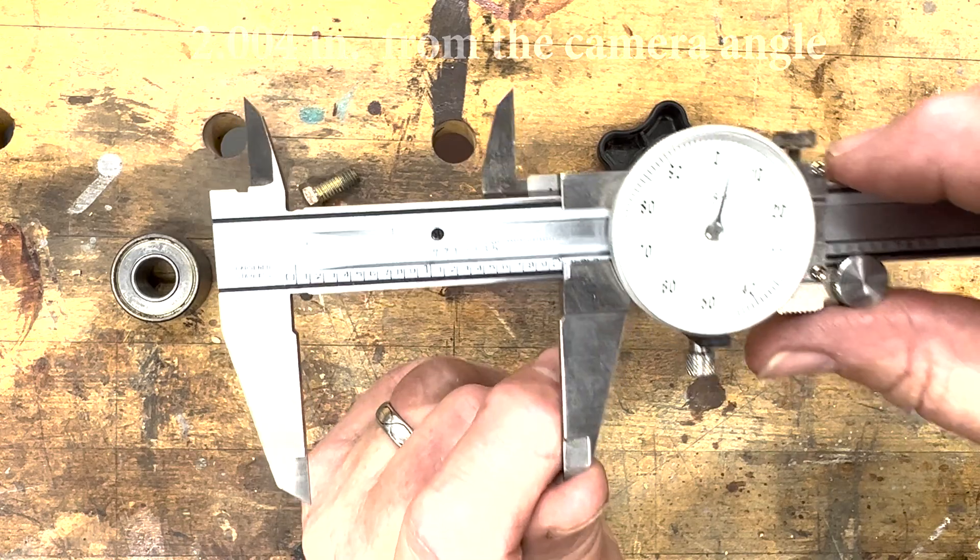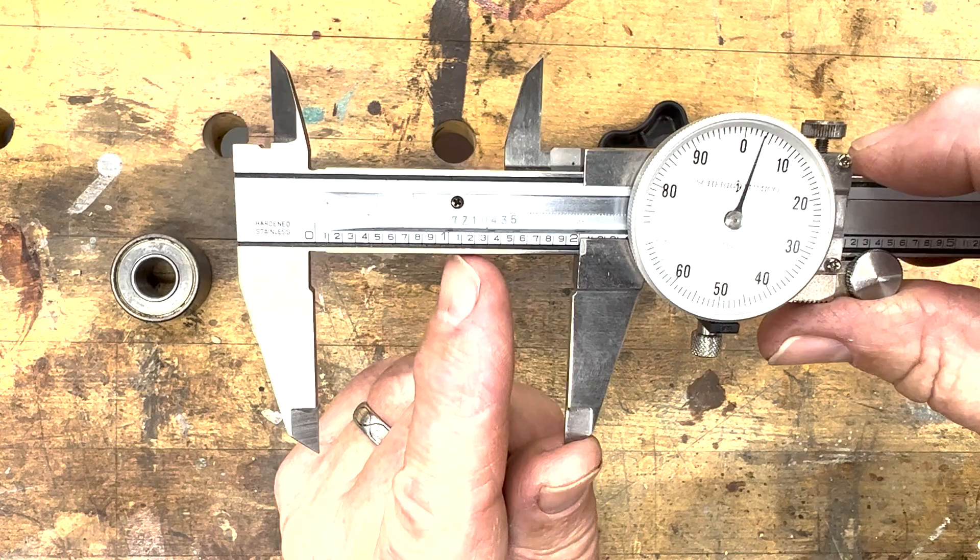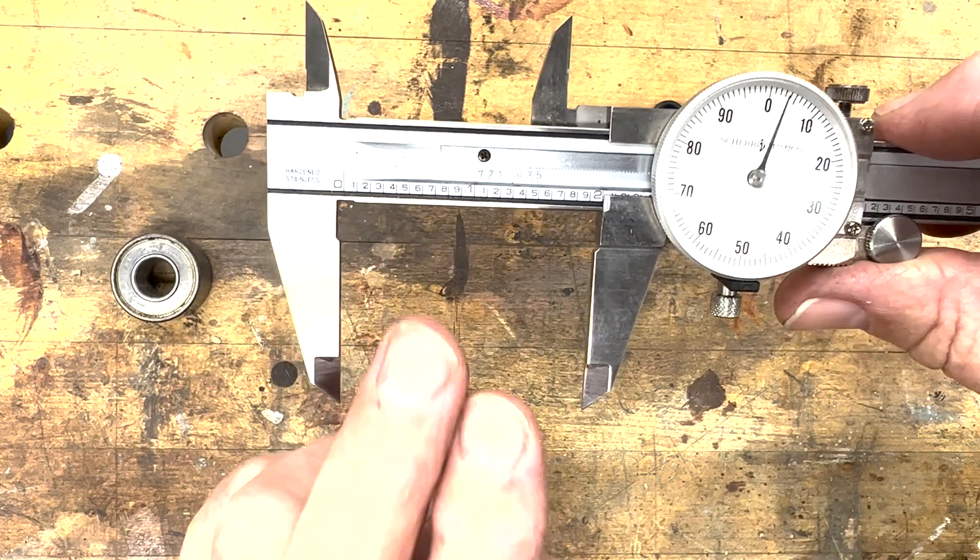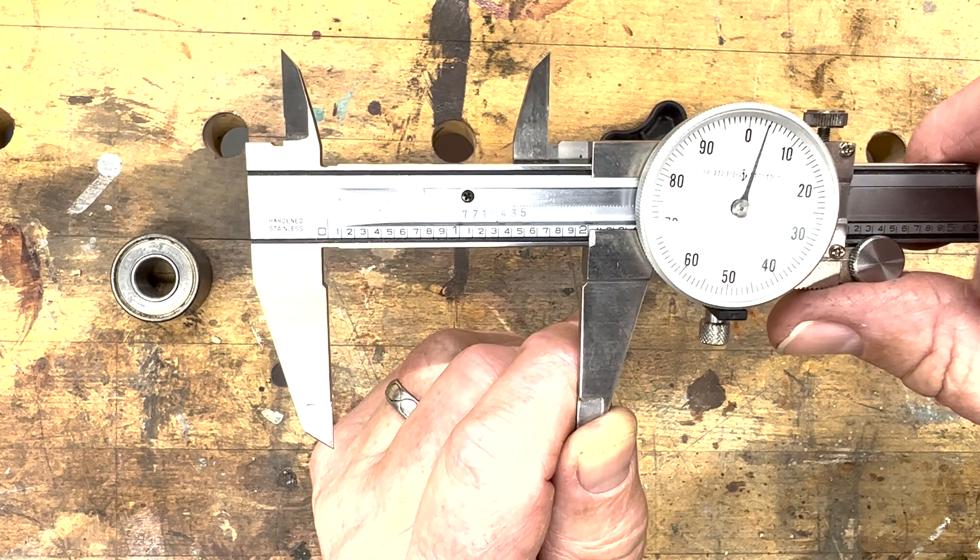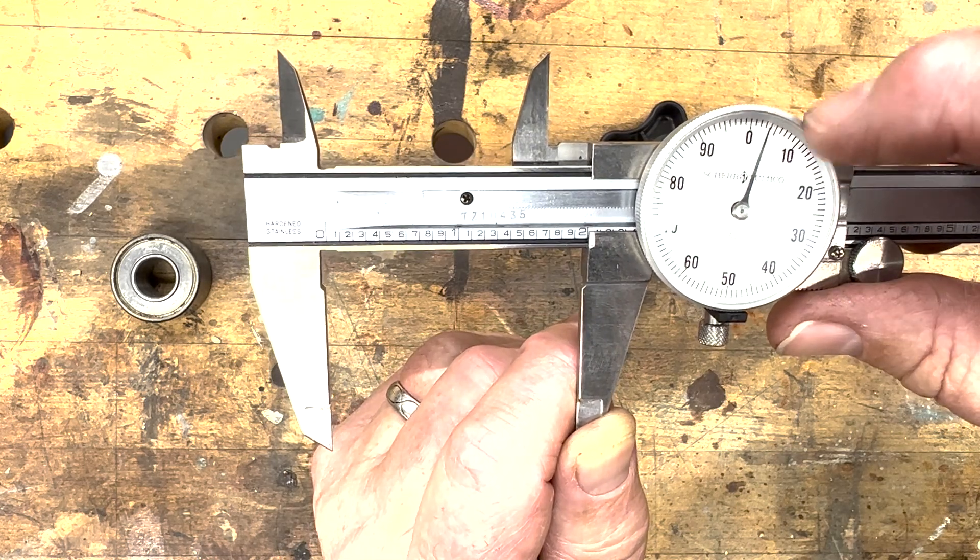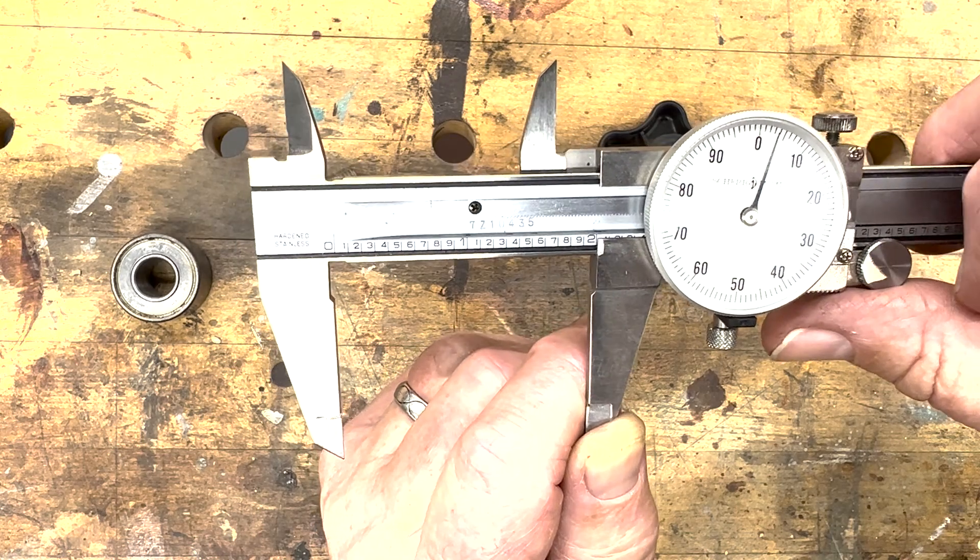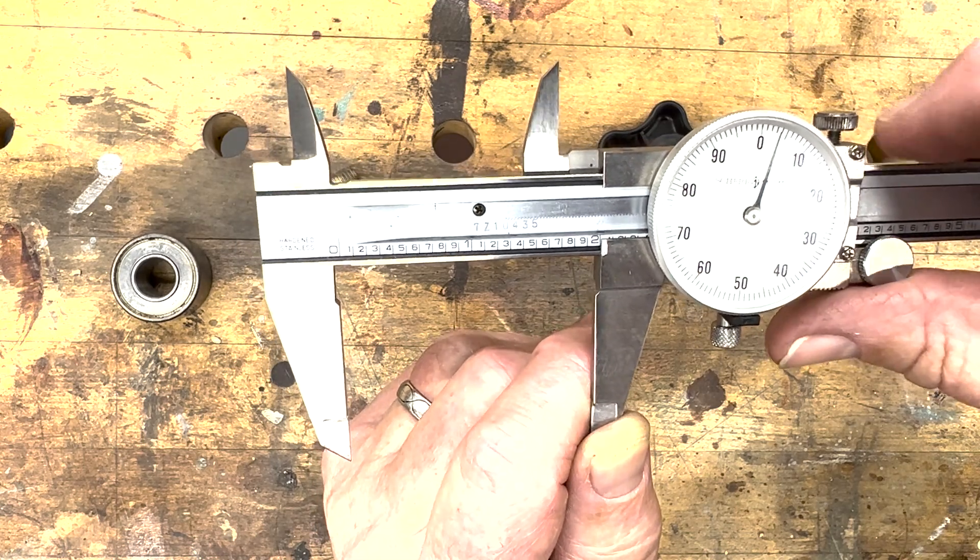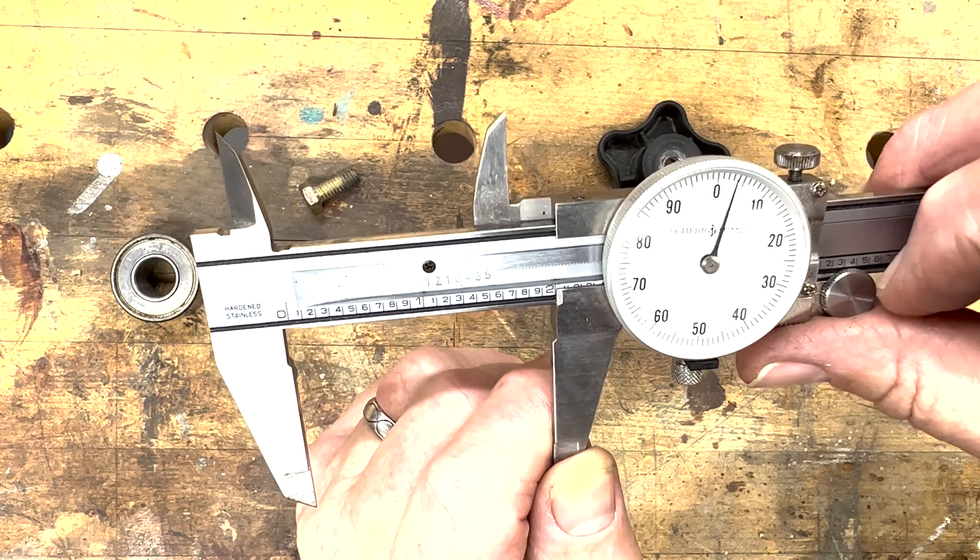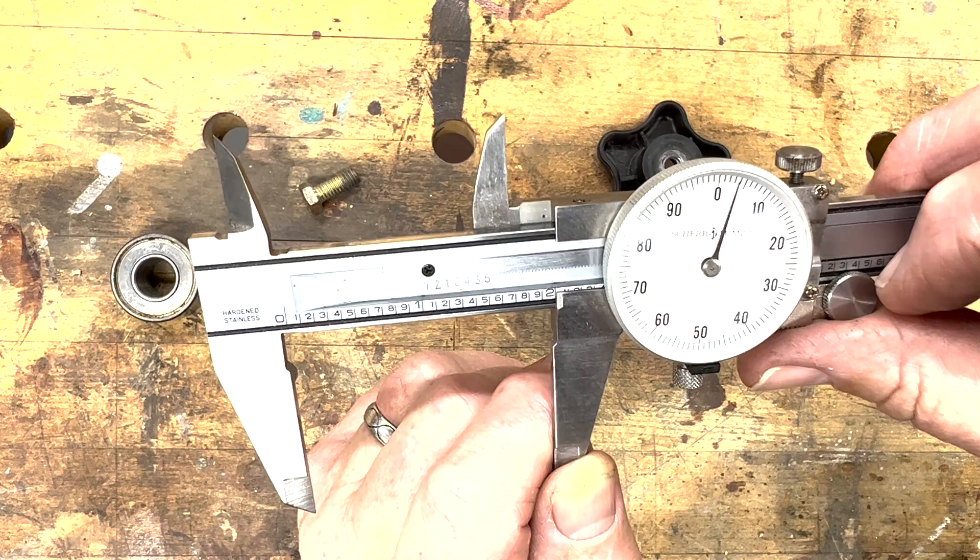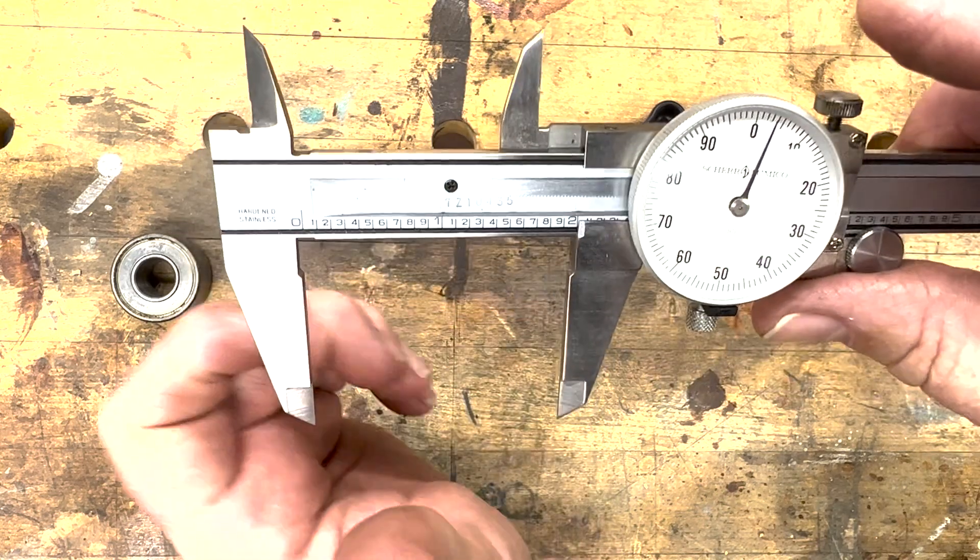So again, this is really easy to read once you get the hang of it. I always, one, look at my whole number, see which one I'm at. Second thing I want to do is see which one of these 100 thousandths mark I am at with my jaw. And then just confirm that with where my needle is pointing on my dial, making sure am I in front of that zero or behind the zero, or maybe I'm right on that zero. Maybe I'm right on one of these numbers, right? And then third, I want to just look at where my needle is pointing on my dial and that's going to give me my hundreds and thousands place there. So again, really easy to read.